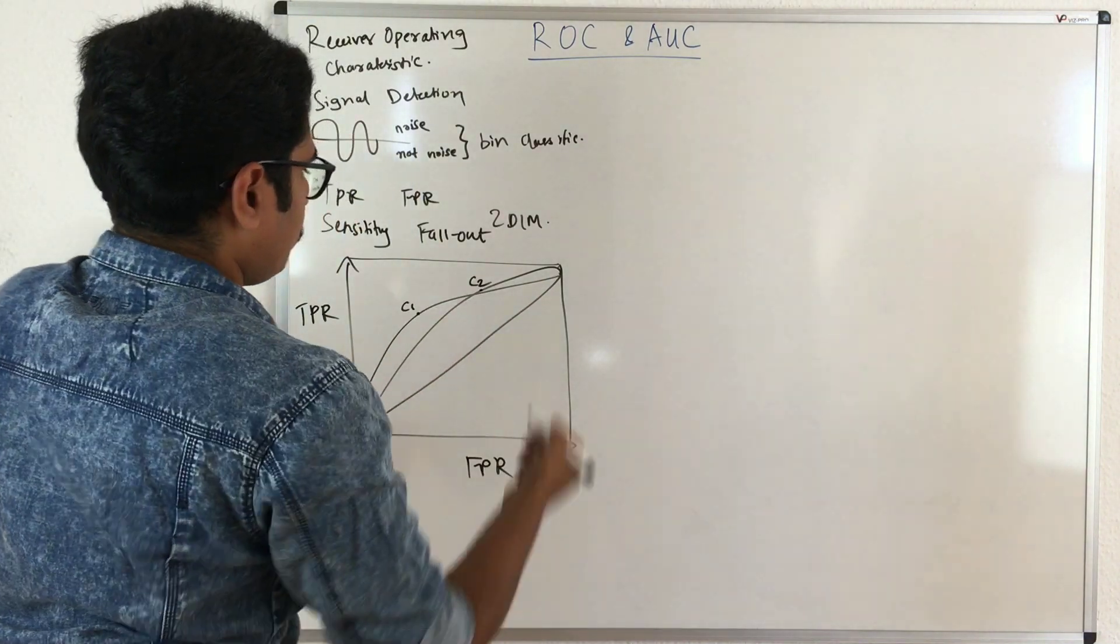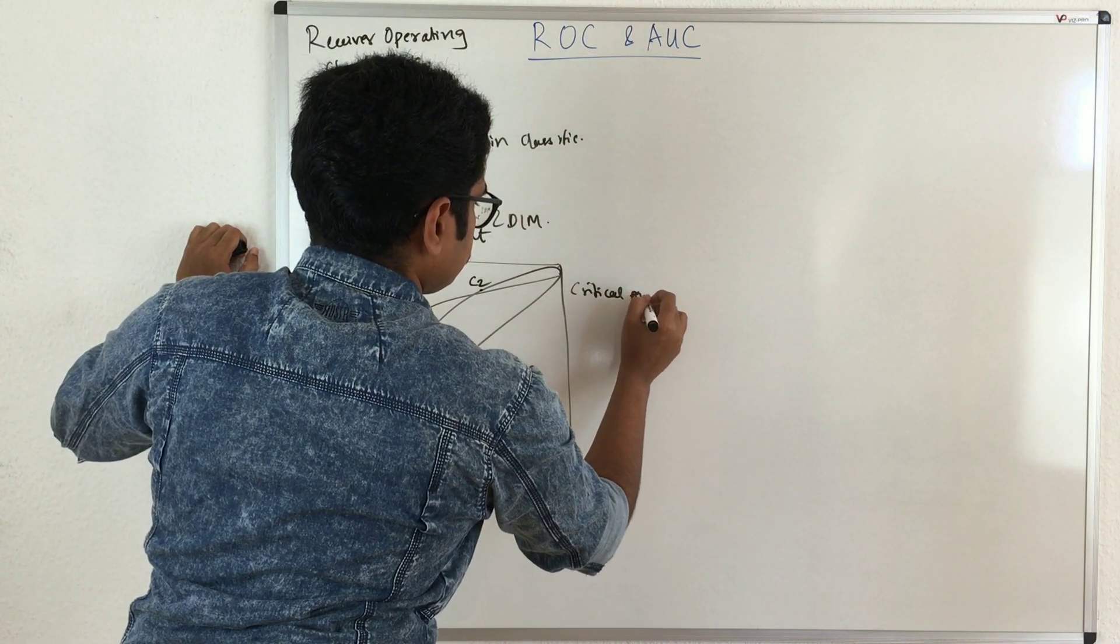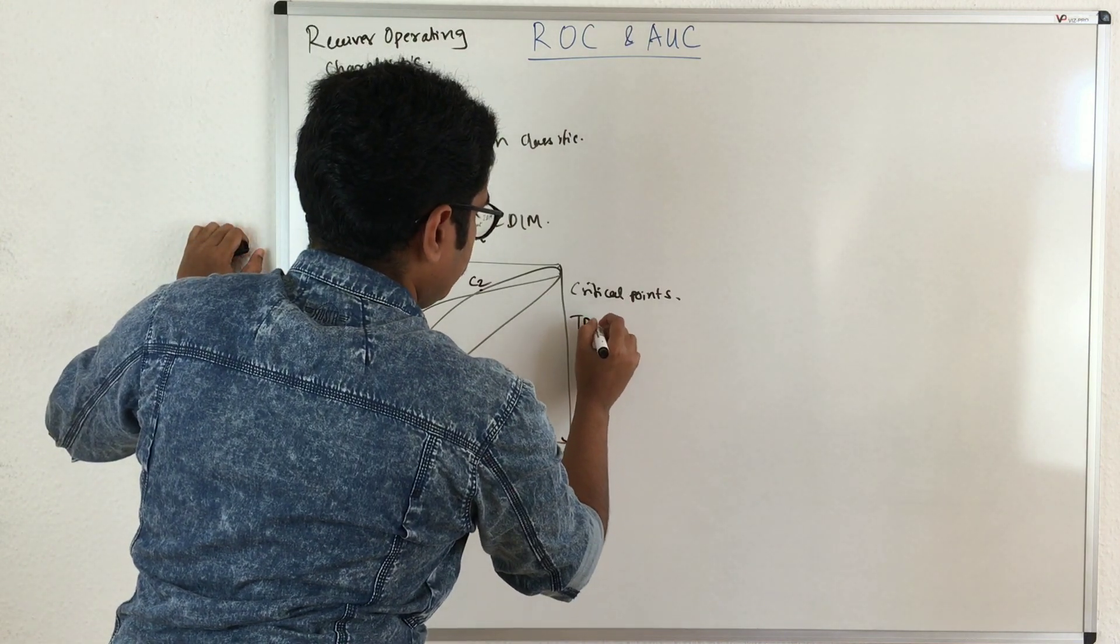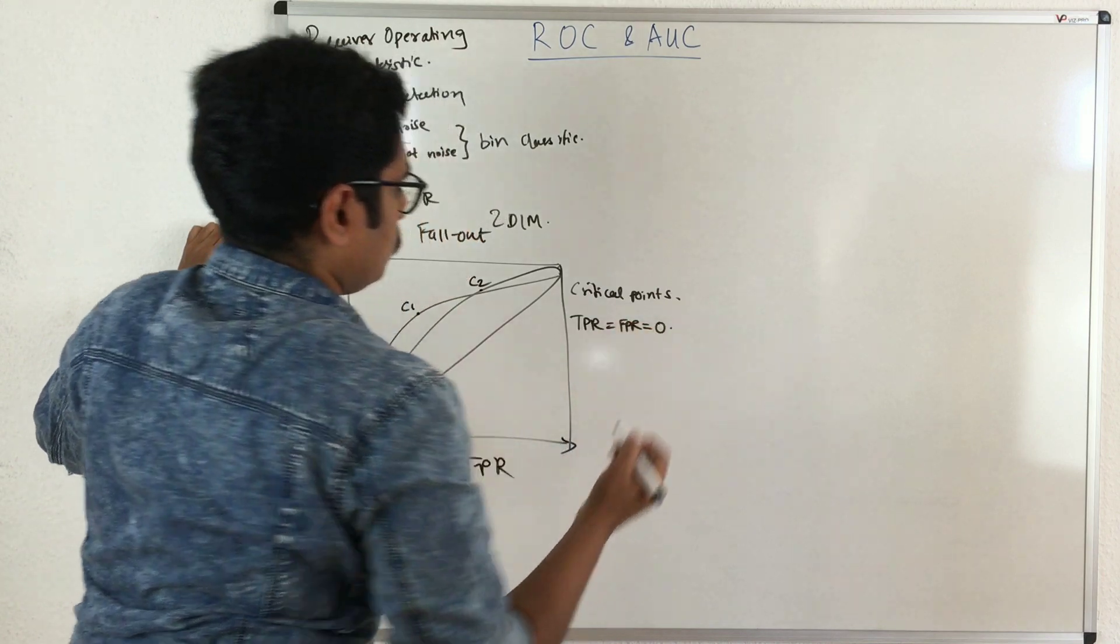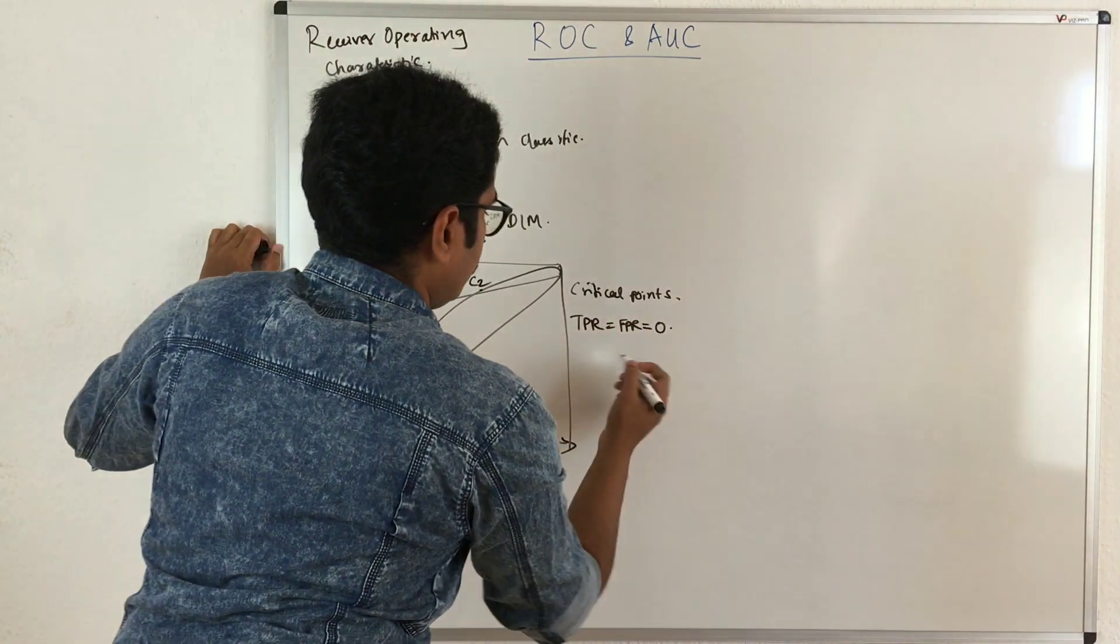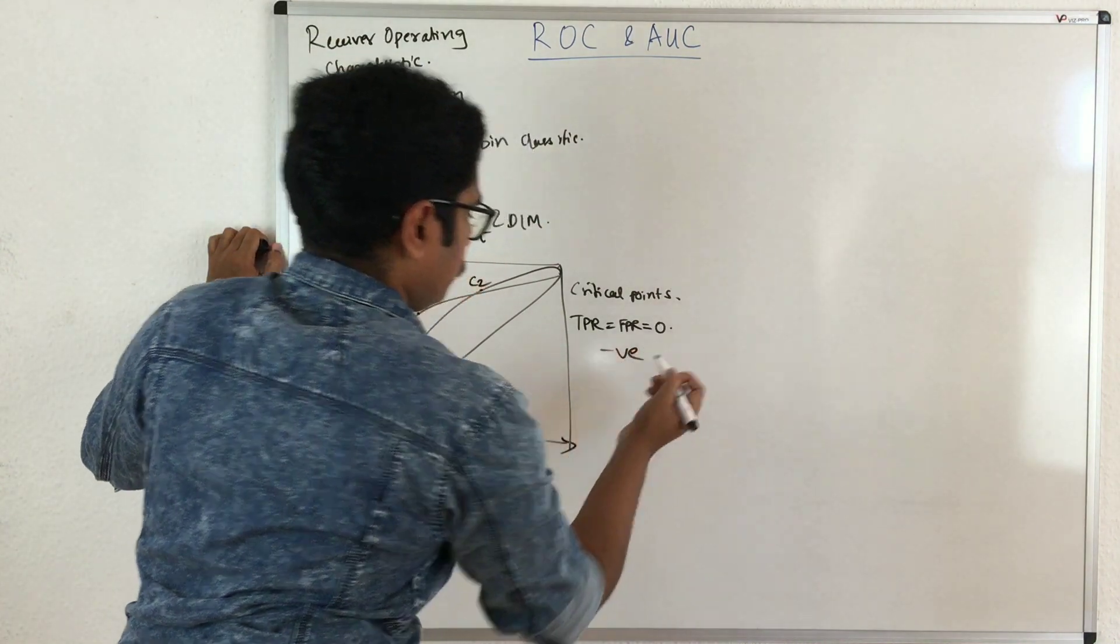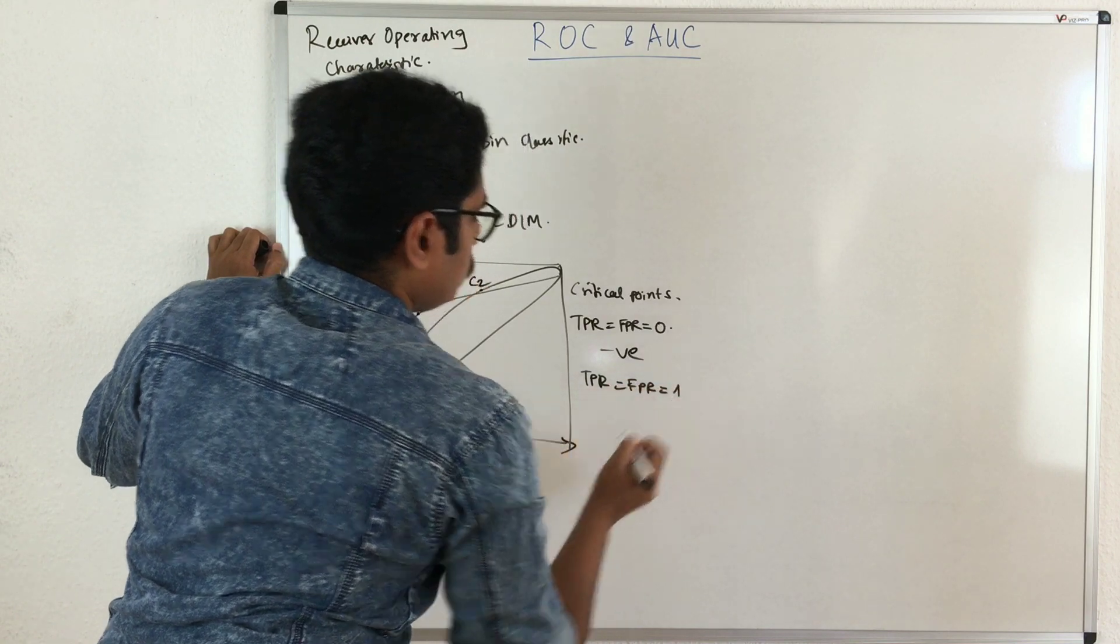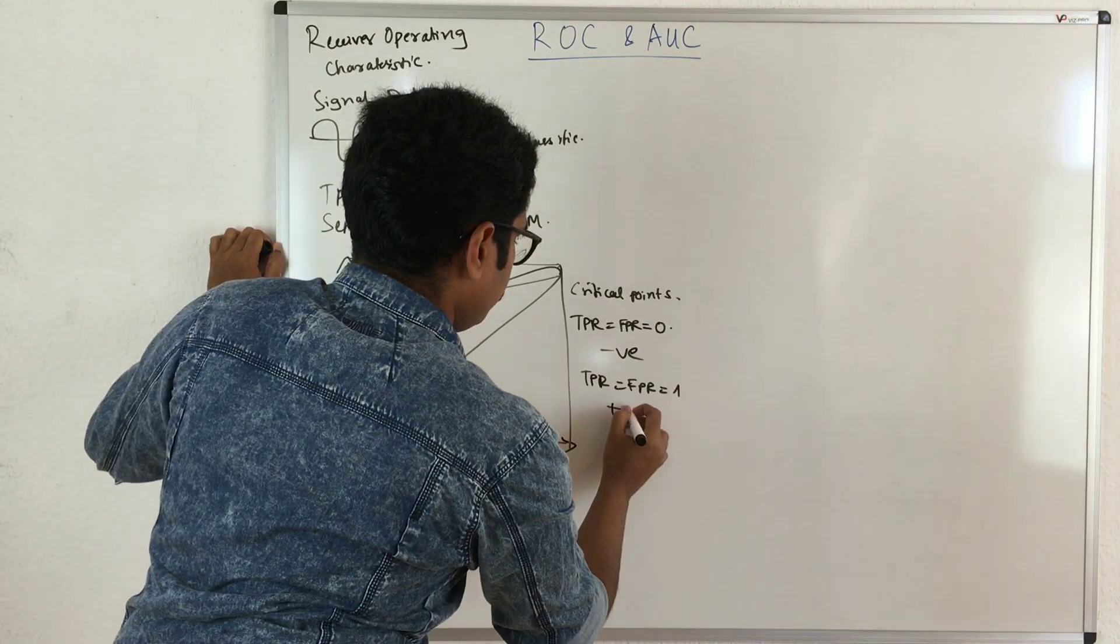Now there are some critical points on this which convey special meaning. If your TPR equals FPR equals zero, that means your classifier always predicts all instances to be of the negative class. If your TPR equals FPR equals one, that means your classifier predicts all instances to be positive.